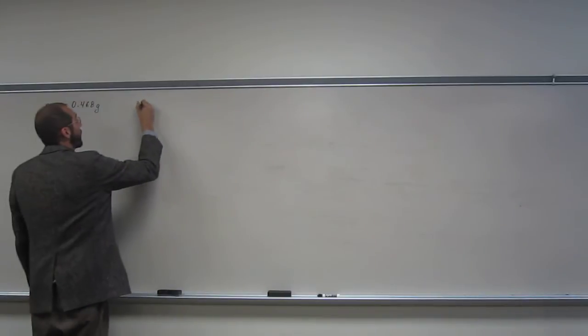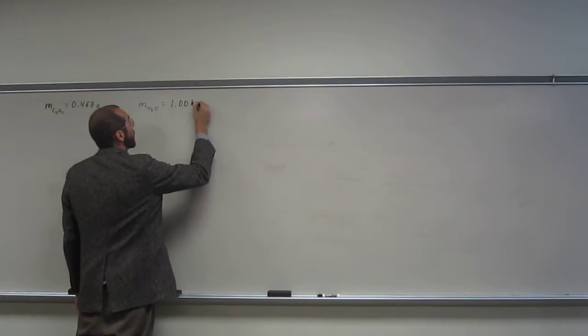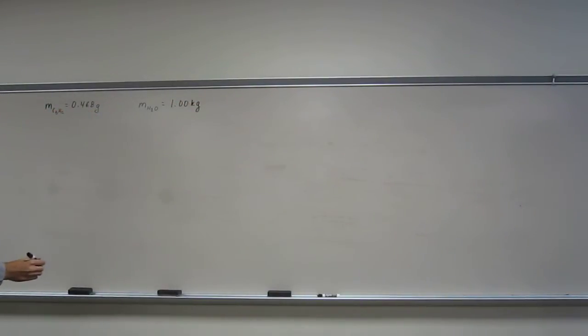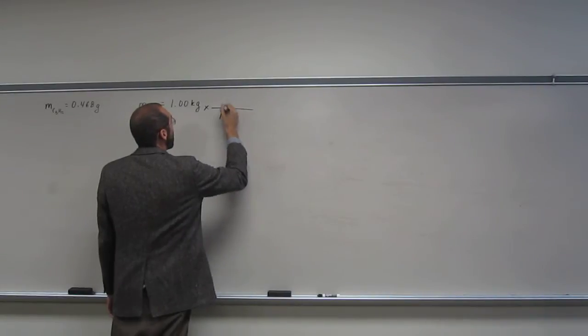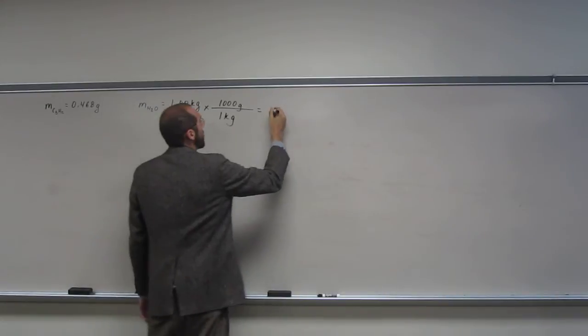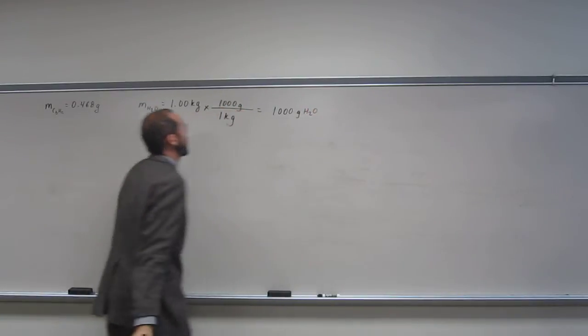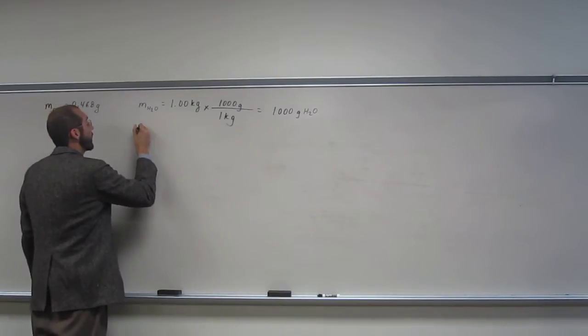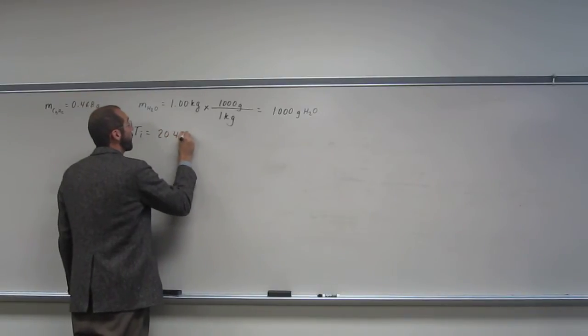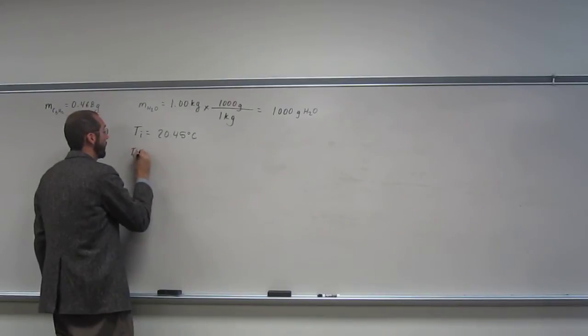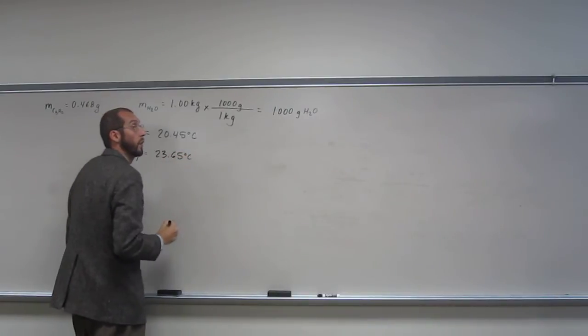It says that the mass of water is 1.0 kilogram. We're going to convert that to grams. So just remember, this is up to 3.66. So it gives us the temperature initial is 20.45 degrees Celsius.